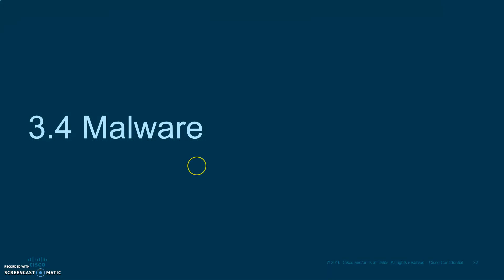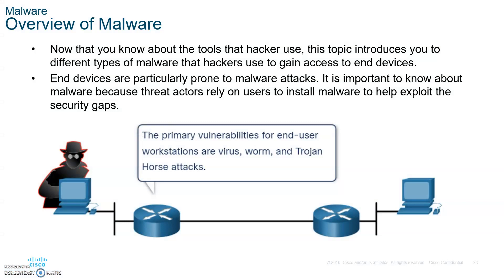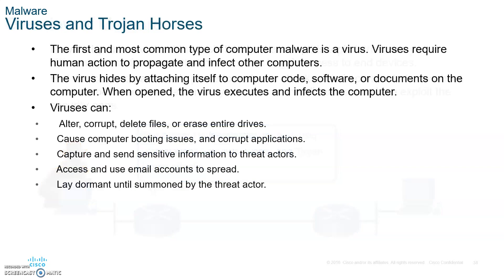Let's talk about malware. When it comes to malware, the primary vulnerabilities for end-user workstations are viruses, worms, and Trojan horses — those are the big issues. Write those down. So what is a virus? A virus hides itself by attaching to computer code, software, or documents. When opened, the virus executes and infects the computer. It needs the user to propagate from one device to another.